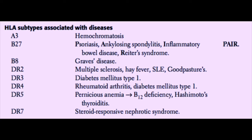HLA-A3 has been associated with increased susceptibility to hemochromatosis. B27 is associated with several diseases — psoriasis, ankylosing spondylitis, inflammatory bowel disease, and Reiter's syndrome. You can remember this with the mnemonic PAIR: Psoriasis, Ankylosing spondylitis, Inflammatory bowel disease, and Reiter's syndrome.